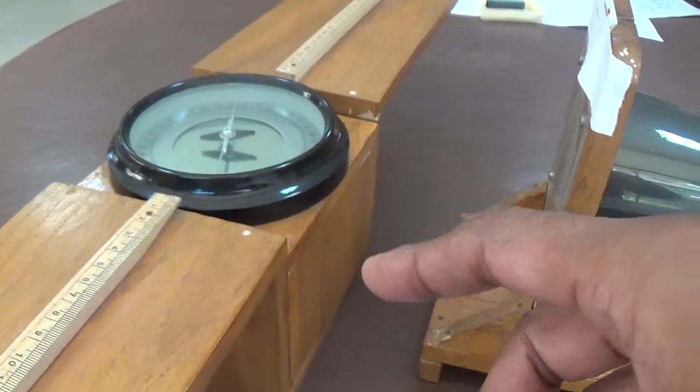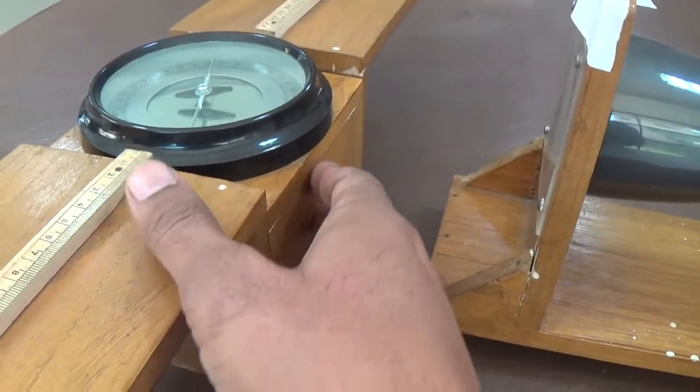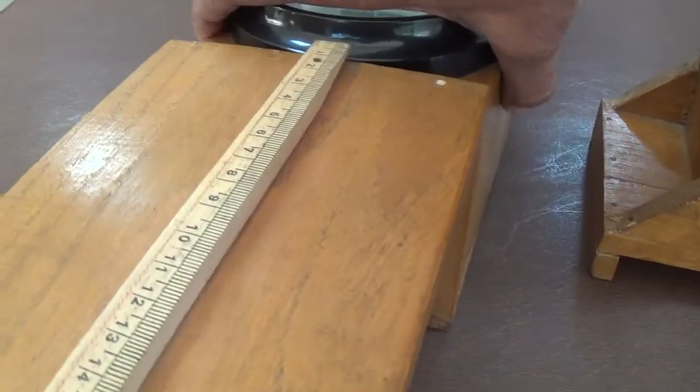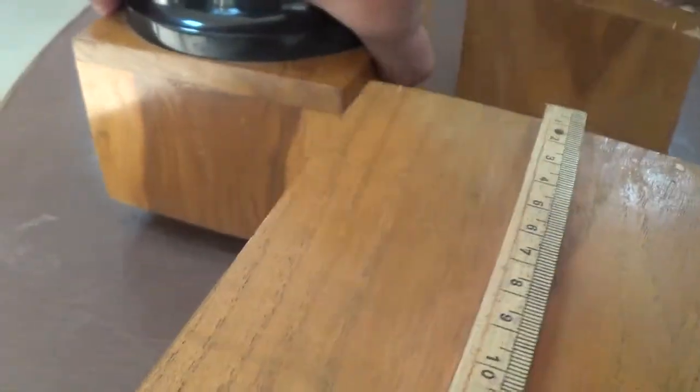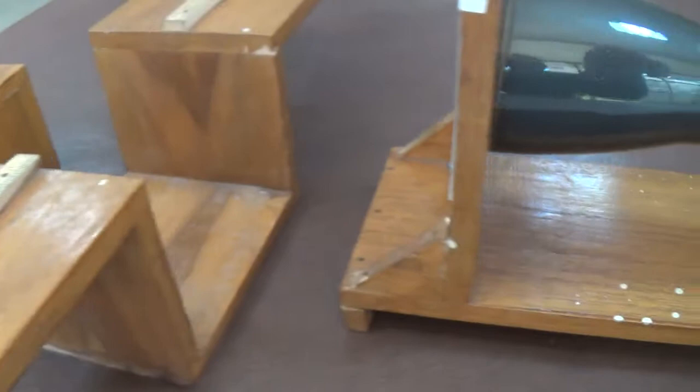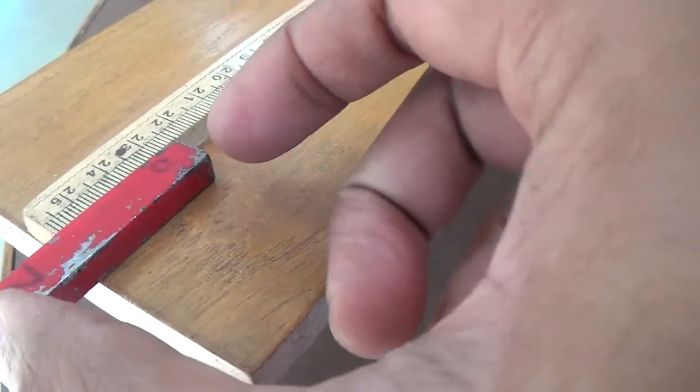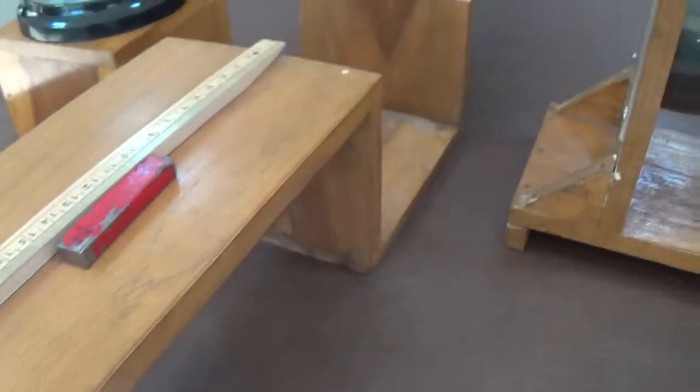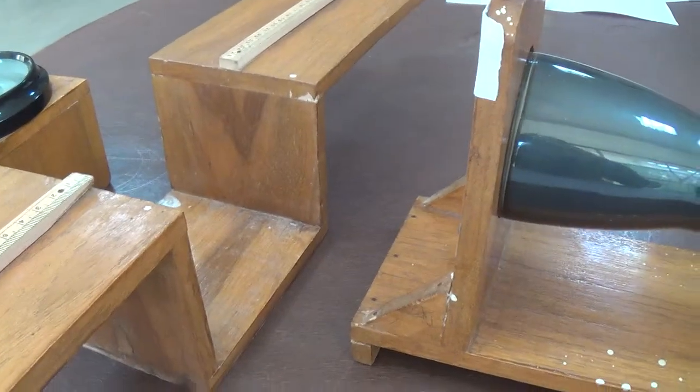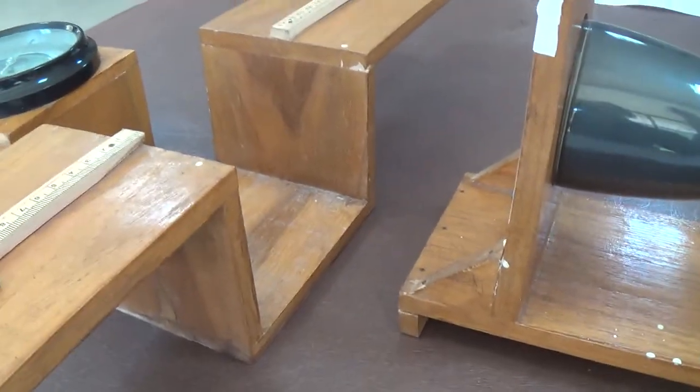You can see this wooden box. We just remove it. In this box we have fixed this compass and put this cathode ray tube, and use these bar magnets. So we use these bar magnets in the second case.